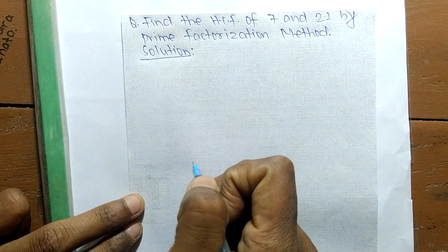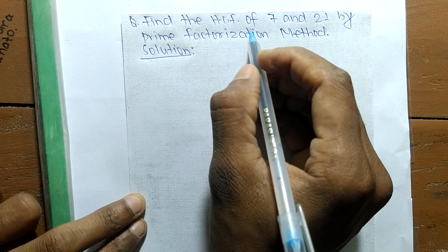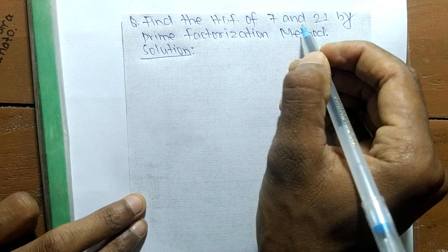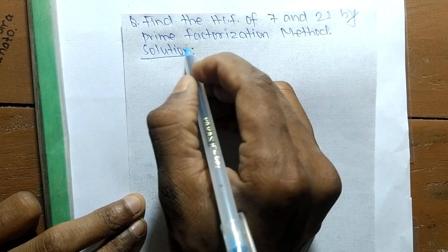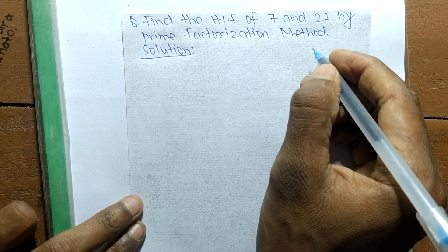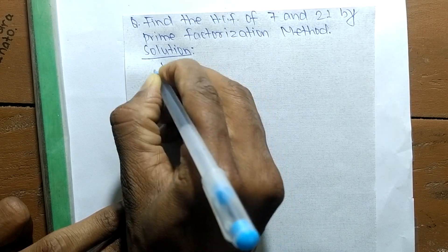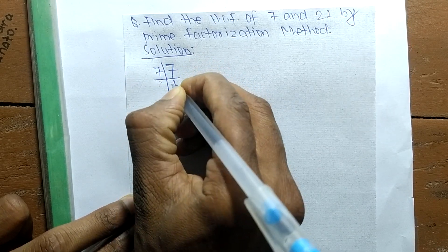Today in this video we shall learn to find the GCF or HCF of 7 and 21 by prime factorization method. First, we find out the prime factors of 7, so it is 7 times 1, which means it is 7.